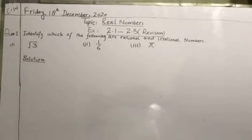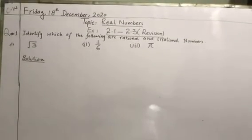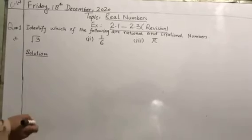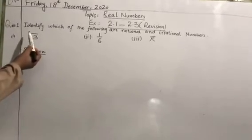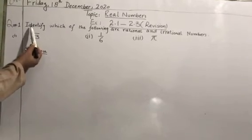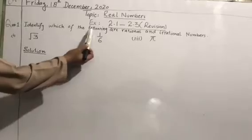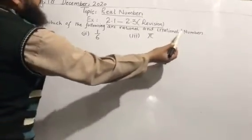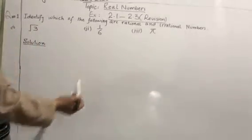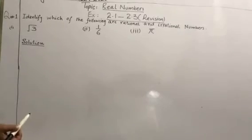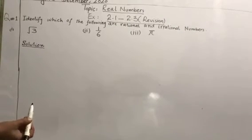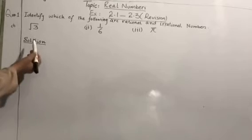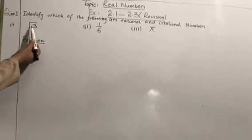We are going to solve Exercise 2.1, question number one. The statement is: identify which of the following are rational and irrational numbers. Some numbers are given and we have to find which are the rational numbers and which are the irrational numbers.